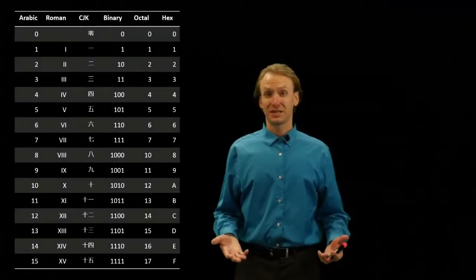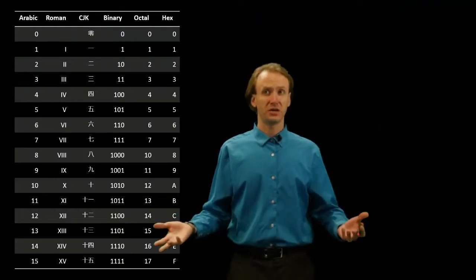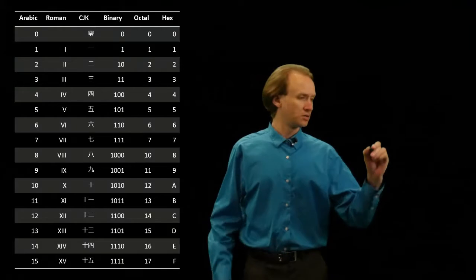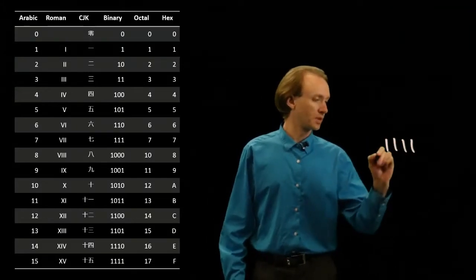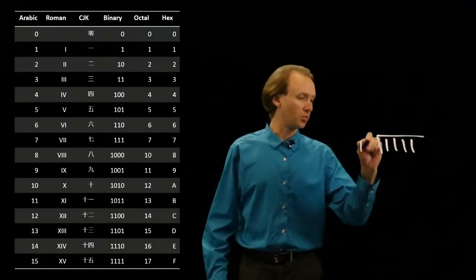We'll start with a couple easy examples for division. So I might have 15 divided by 3 and I'd like to do this in binary. So 15 in binary is 1111 and 3 is 11.